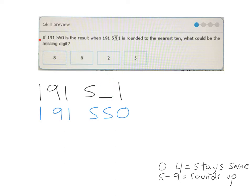So this first example says, if 191,550 is the result when this number with the missing digit is rounded to the nearest 10, what could be the missing digit? So this is our answer. This is where we were before.